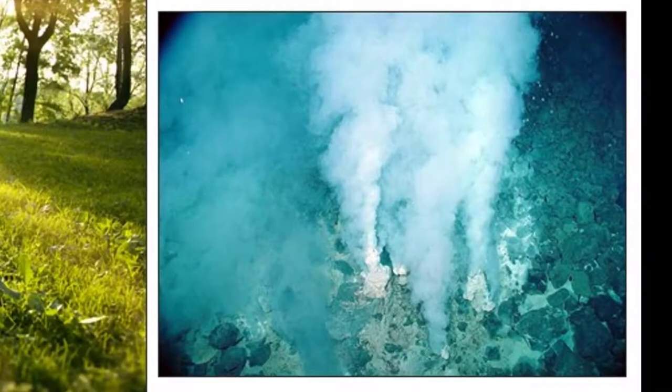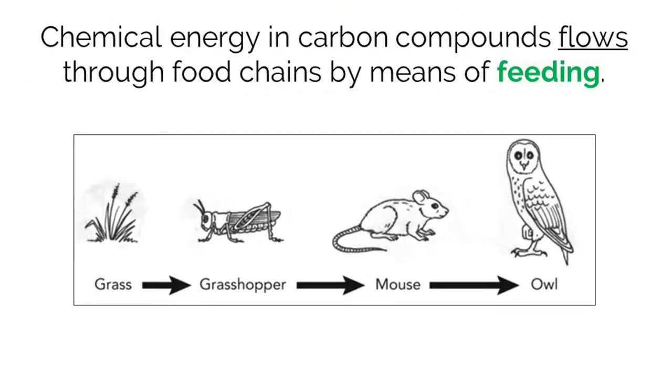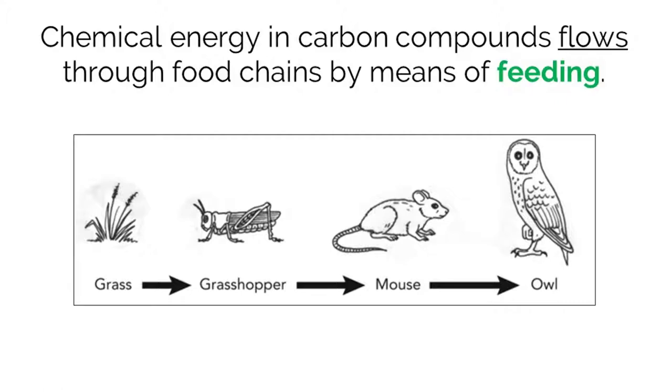You will usually find these organisms in hostile environments like volcanic fumaroles, geysers, and deep sea vents. Once chemical energy is harvested by autotrophs or chemotrophs, it can flow through a food chain via the process of feeding.